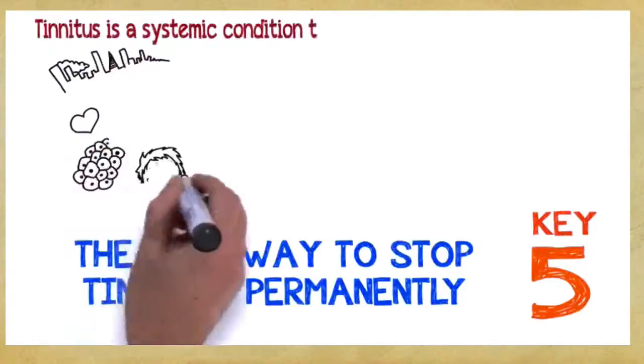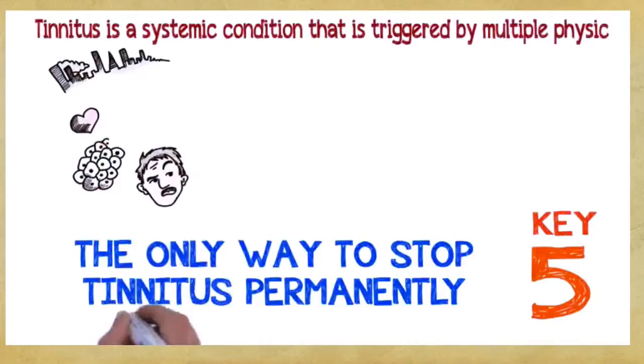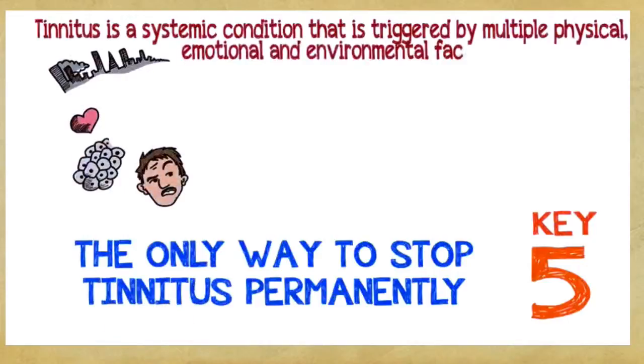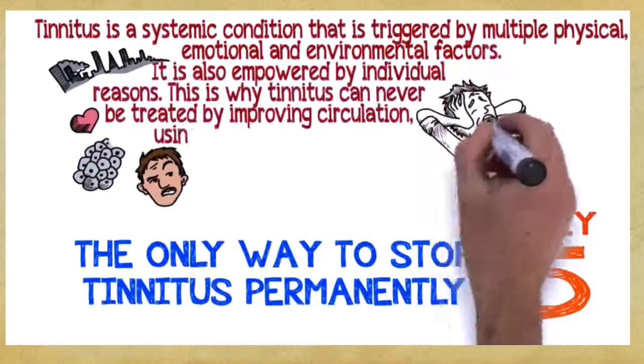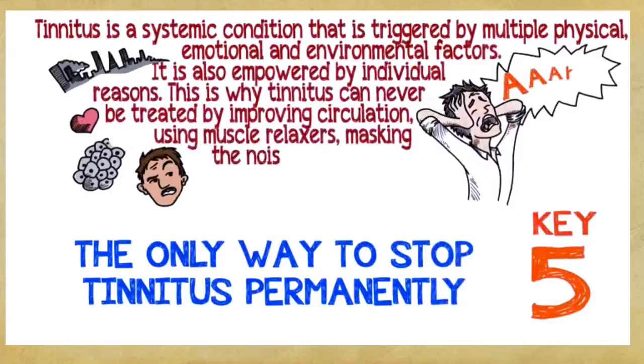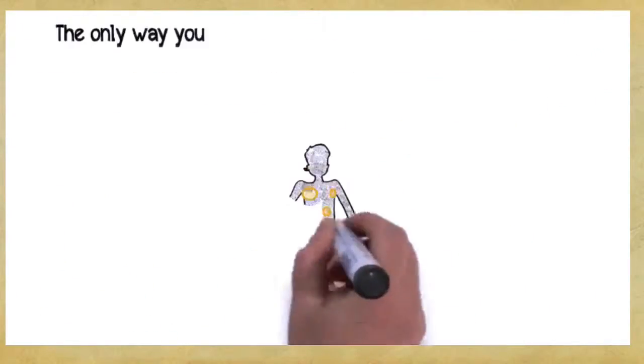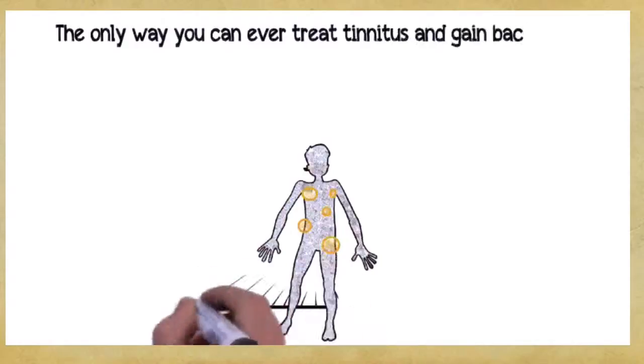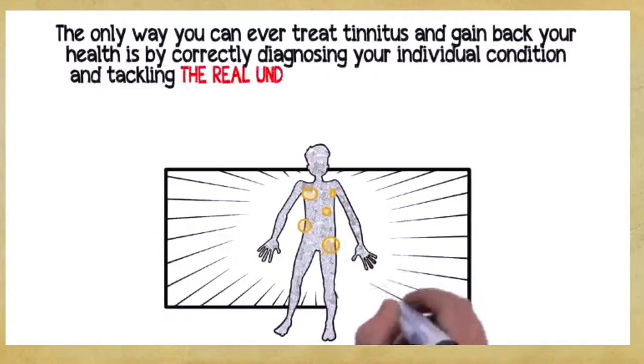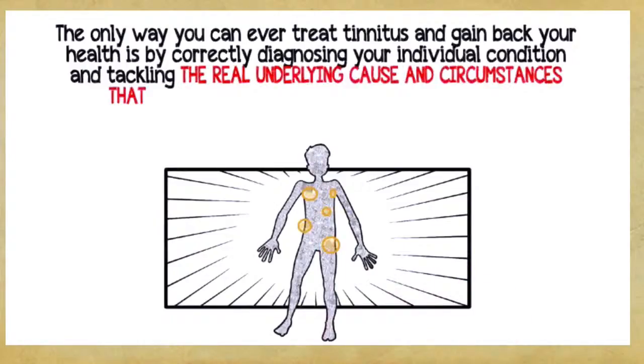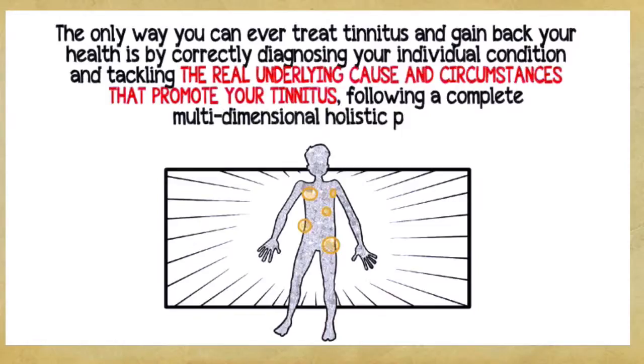Tinnitus is a systemic condition that is triggered by multiple physical, emotional, and environmental factors. It's also empowered by individual reasons. This is why tinnitus can never be treated by improving circulation, using muscle relaxers, masking the noise, or cutting a nerve in your auditory system. The only way you can ever treat tinnitus and gain back your health is by correctly diagnosing your individual condition and tackling the real underlying cause and circumstances that promote your tinnitus, following a complete, multi-dimensional, holistic program.